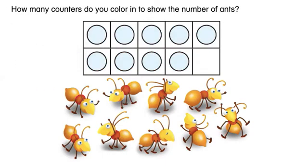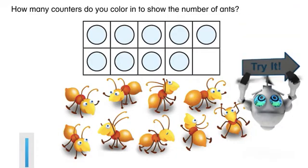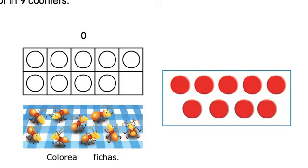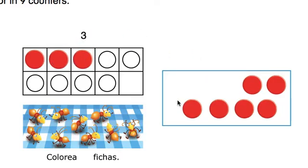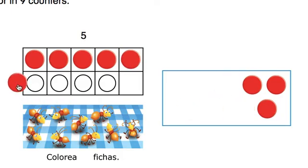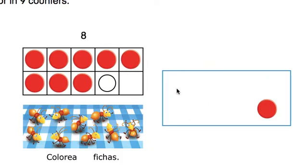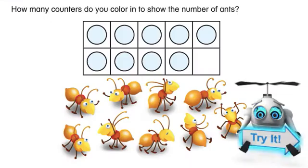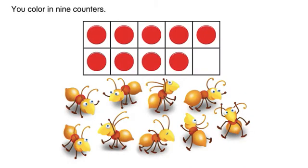How many counters do you color in to show the number of ants? Color in nine counters. You color in nine counters.